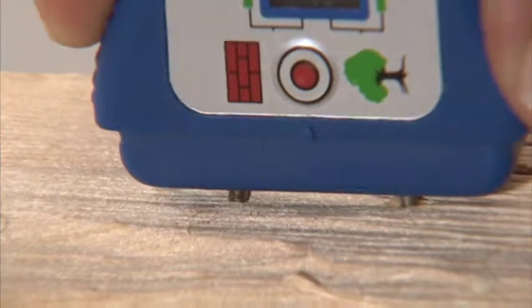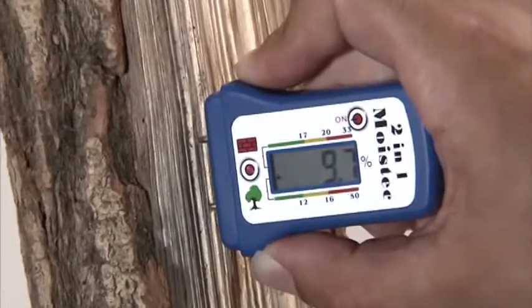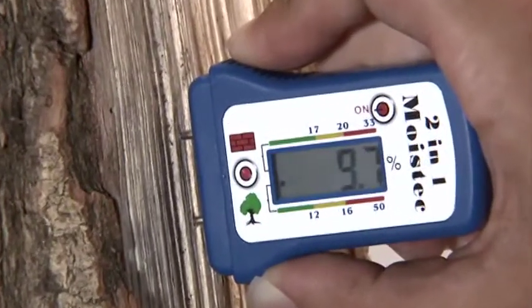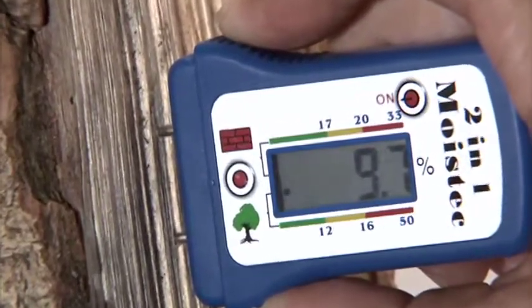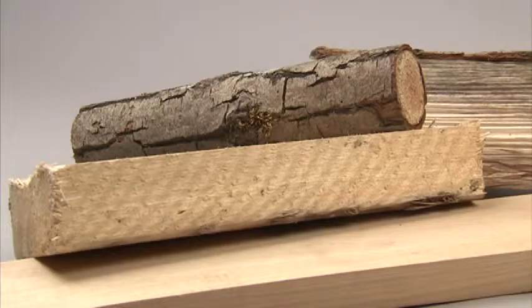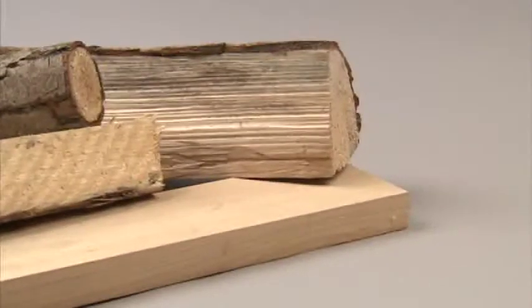The measurement result is shown on the LCD display, quickly and easily. The Moistek 2-in-1 Meter is especially suitable for rough surfaces.